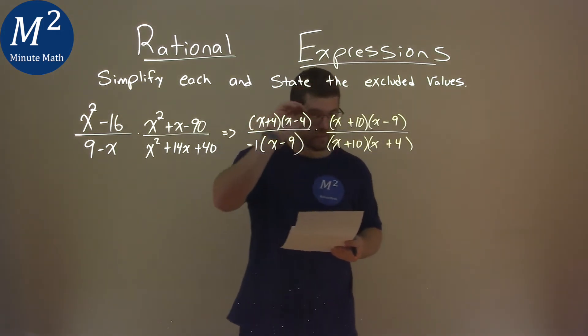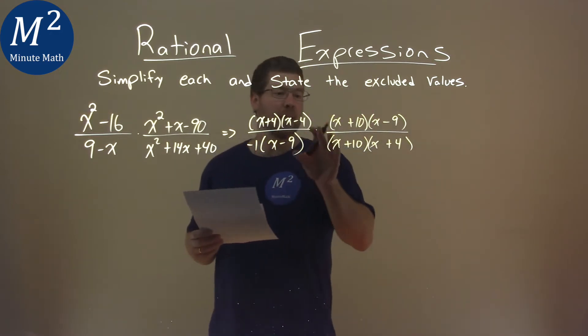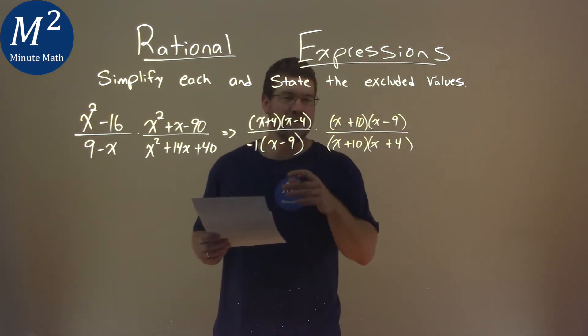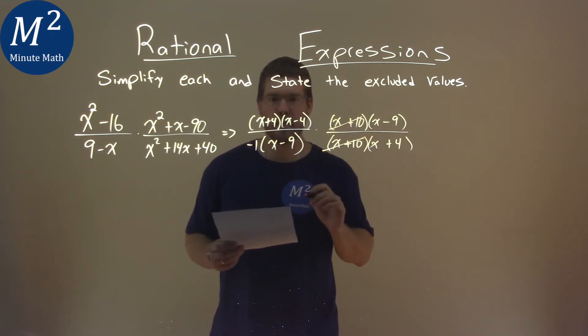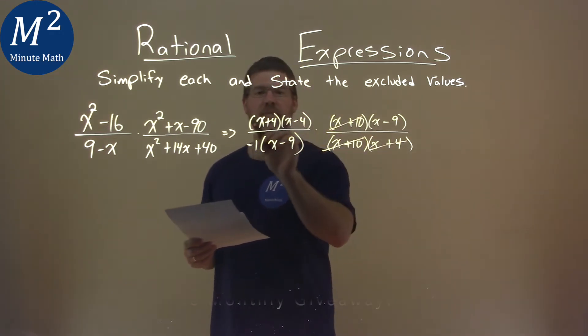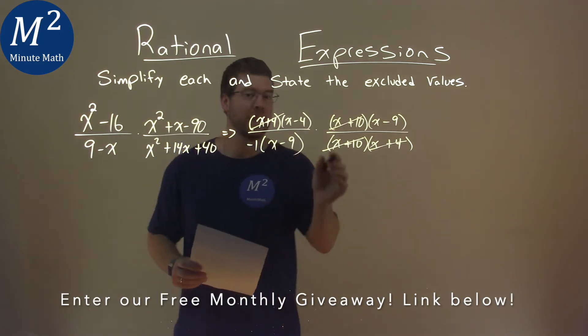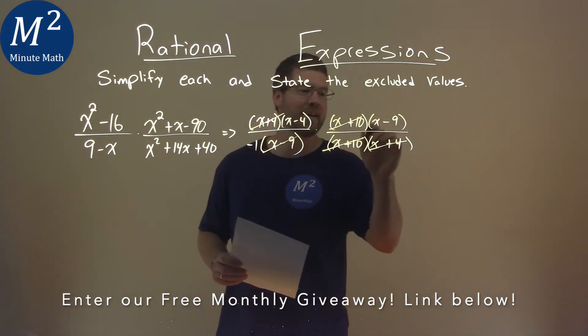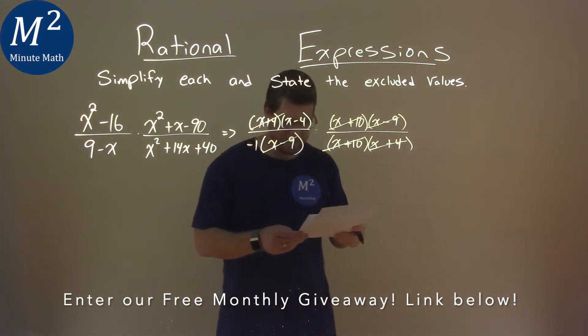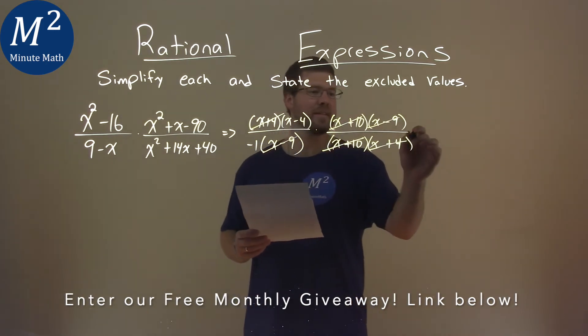Alright, this is like my favorite part. We got a whole bunch of things here in parentheses and let's cross off where we can. I see x plus 10 and x plus 10 right there. I see x plus 4 and x plus 4. I also see x minus 9 and x minus 9 here. So what is left?